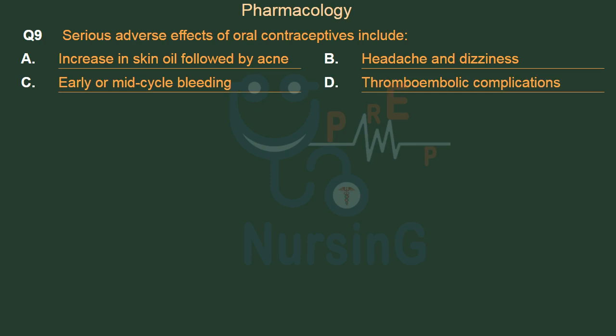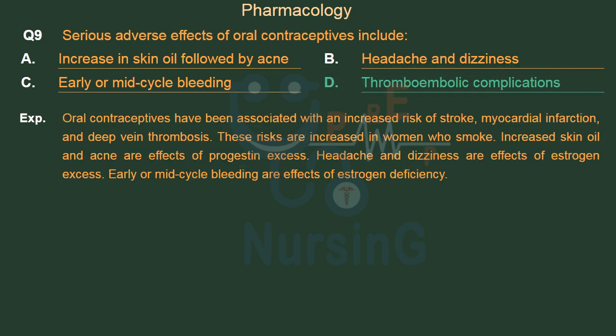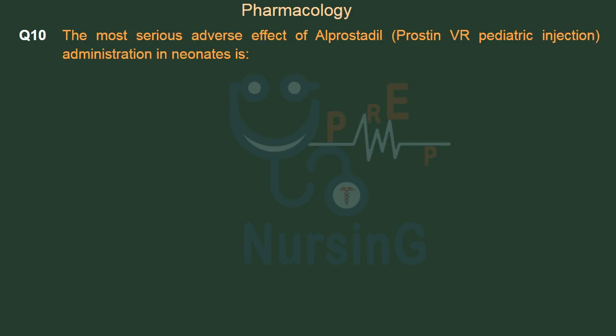The right answer is Option D: Thromboembolic complications. Oral contraceptives have been associated with an increased risk of stroke, myocardial infarction, and deep vein thrombosis. These risks are increased in women who smoke. Increased skin oil and acne are effects of progestin excess. Headache and dizziness are effects of estrogen excess. Early or mid-cycle bleeding are effects of estrogen deficiency.